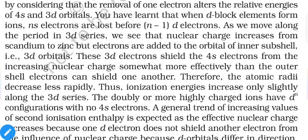Therefore, atomic radii decrease less rapidly, and ionization energies increase only slightly along the 3d series. Doubly or more highly charged ions have a dⁿ configuration with no 4s electrons — meaning ions with +2 or greater charge have electrons only in d orbitals, with empty 4s orbitals, because both 4s electrons have already been removed.